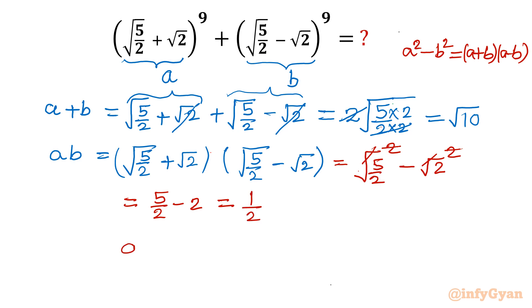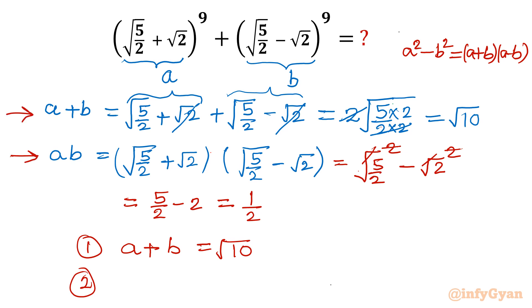So far we have concluded two equations: equation 1 is a + b = √10, and equation 2 is a × b = 1/2. Our objective is to find a⁹ + b⁹.